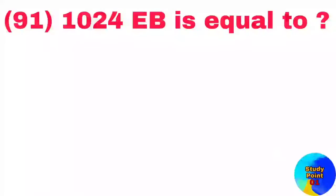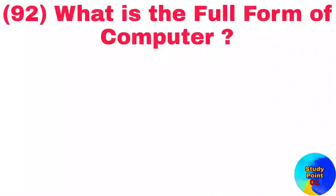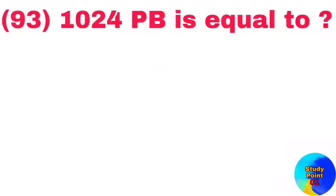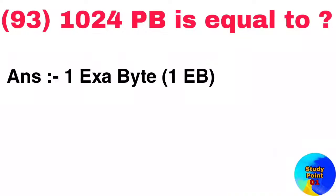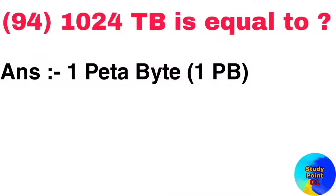Question number 91: 1024 EB is equal to 1 Zettabyte. Question number 92: What is the full form of COMPUTER? Answer: Common operating machine particularly used for trade, education, and research. Question number 93: 1024 PB is equal to 1 Exabyte.